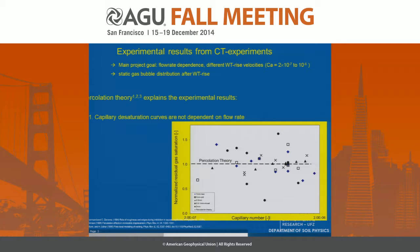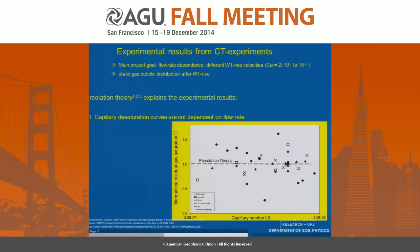We started with the hypothesis that a faster rise of the water table means gas has less time to escape, and therefore we expected a higher trapped amount of gas. But for all experiments we did, the results just fluctuate around the prediction from percolation theory — which is exactly what Blunt and Scheer's modeling predicts in this range of capillary numbers.